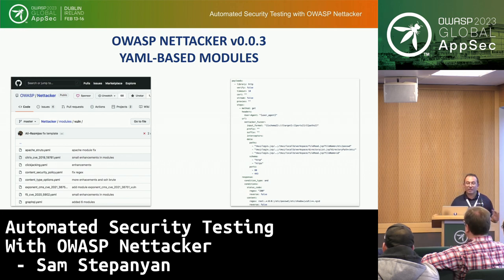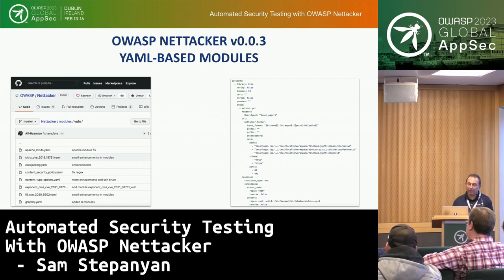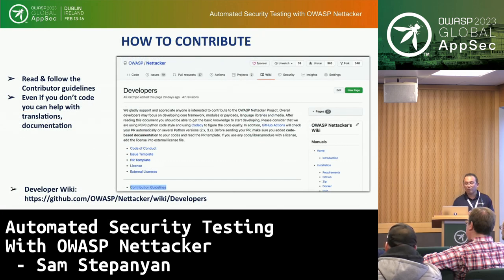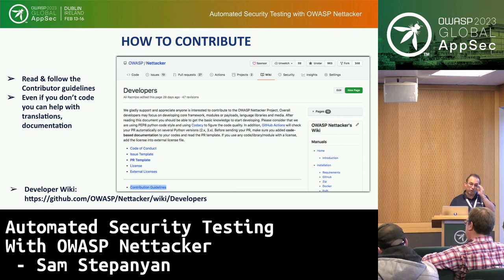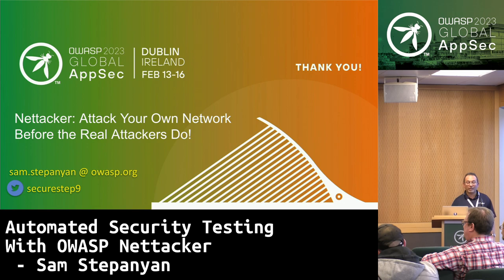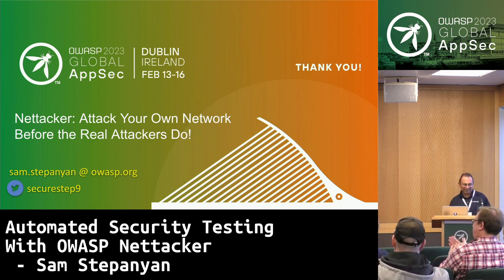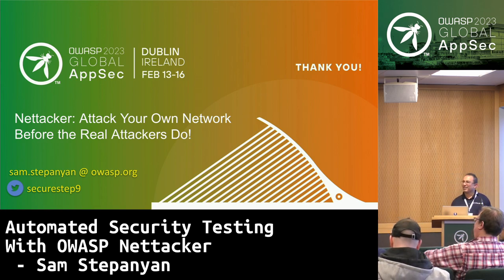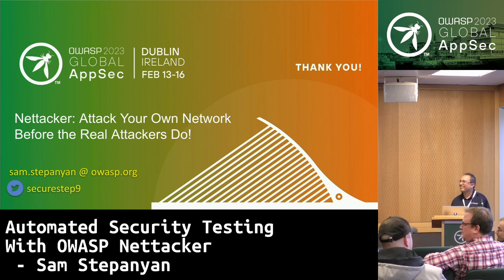In version 3, all the modules are defined in YAML — in version 002, everything was in Python. You can create and contribute your own modules. If there's a new vulnerability out, you can create a new YAML module to search for that specific vulnerability. We're looking for more contributors — there are contributor guidelines on the website. You don't have to be a Python coder to contribute: you can also help with translations, documentation, and proofreading, since a lot of documentation is written by students for whom English isn't the first language. Thank you very much — go attack your own network before the real attackers do.